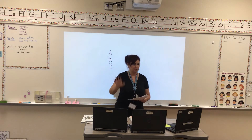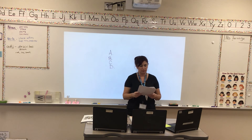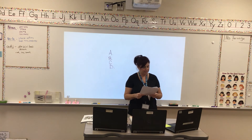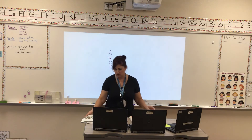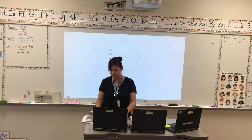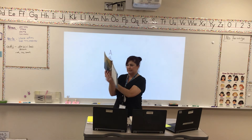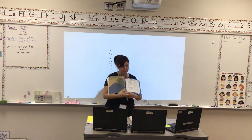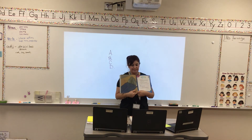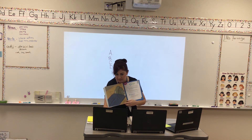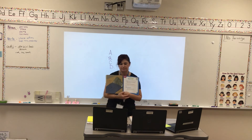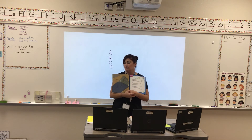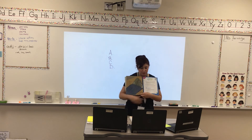Number six: how does Spoon most likely feel at the end of the story? Is it A, sad; B, brave; C, proud; or D, worried? Harper, what did you get? C — he most likely feels proud that he can do all these things that he learned were so special to him. Good job, erase your board.